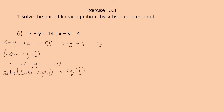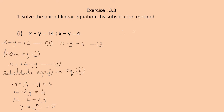Instead of x, write 14 − y, so the second equation becomes: 14 − y − y = 4, that is, 14 − 2y = 4. Then 14 − 4 = 2y, so y = 10/2 = 5. Therefore, y = 5.